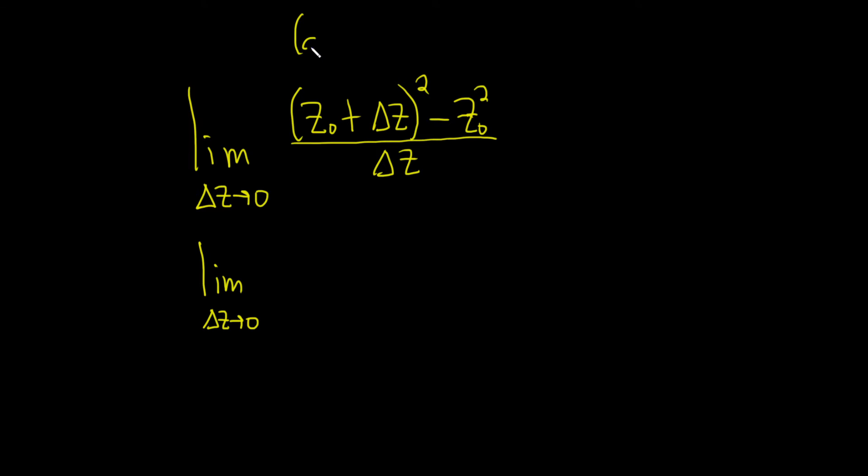we'll use a familiar formula. If you have a plus b, and you square it, you square the first term. Then you multiply the a and the b, and you double the result, so 2ab,